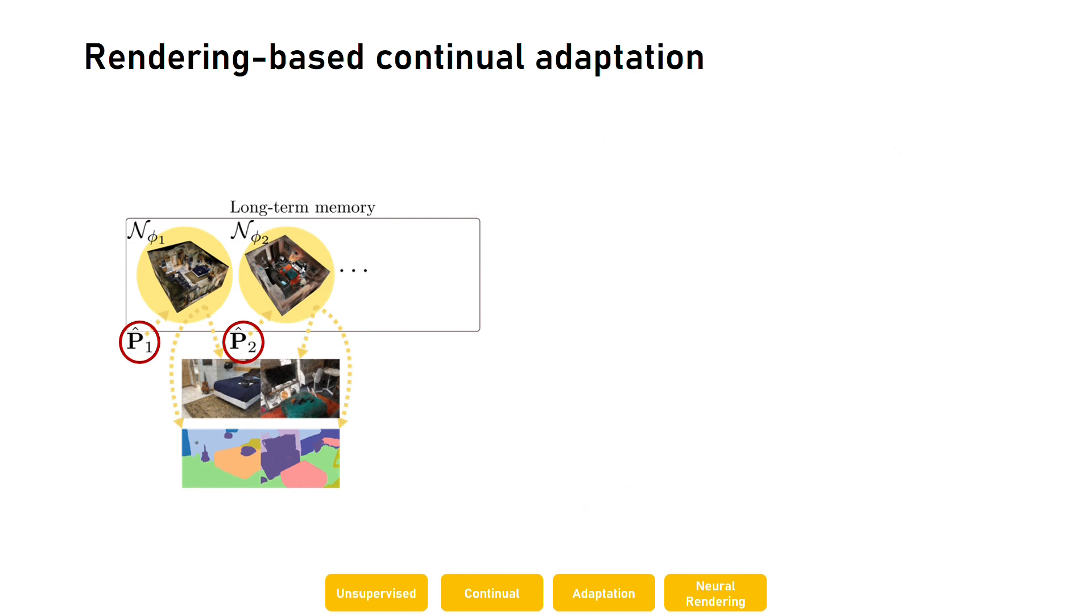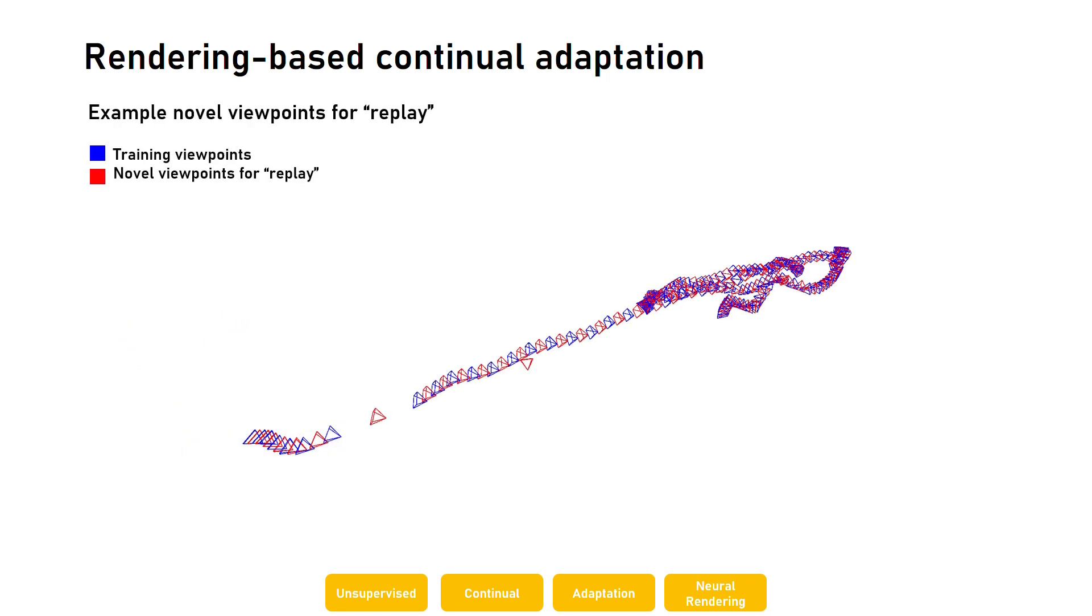Crucially, NeRF enables rendering from arbitrary viewpoints in the previous scenes, including those that have not been seen during training. In our experiments, we test rendering from novel viewpoints simply interpolated between training poses.